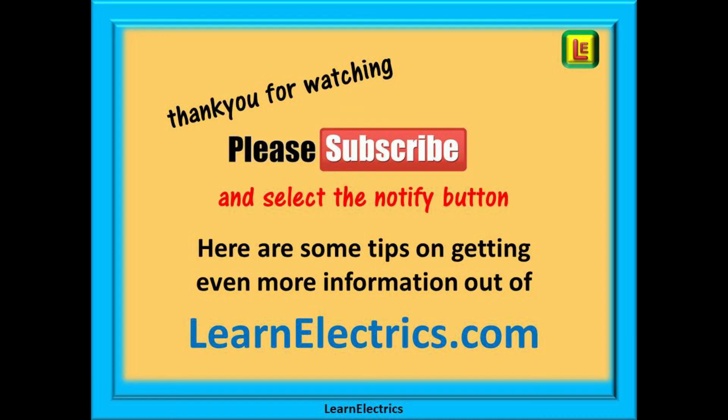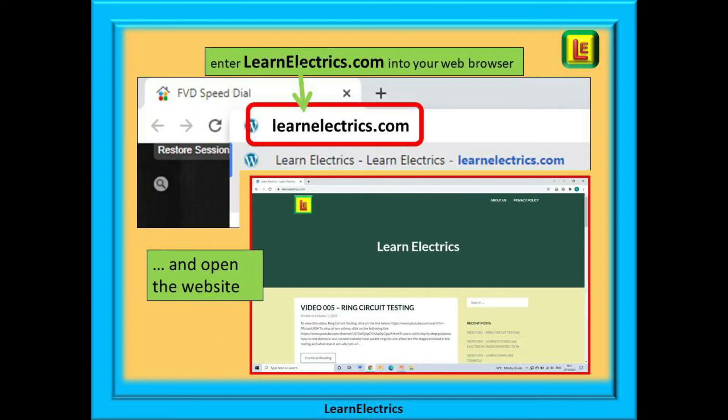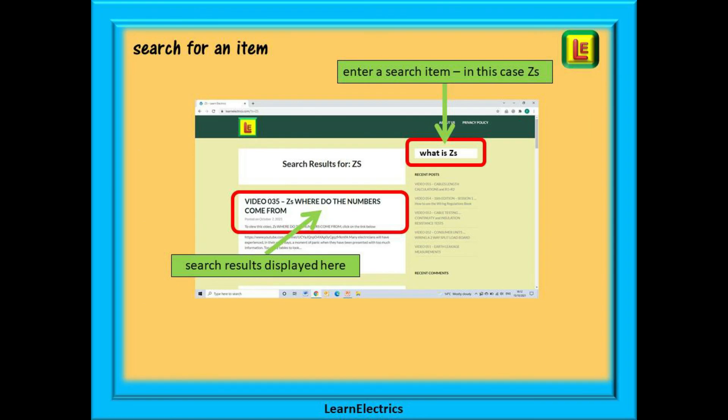Here are some tips on getting even more information and help out of learnelectrics.com. At your web browser enter learnelectrics.com into the search bar. Select learnelectrics.com from the choices offered and the website as shown will open up for you. You now have a couple of choices. You can search for a help item or any video by entering a keyword into the search bar on the right. Click on return and all the help files and videos with that word in the title will be listed for you. They will be shown with a short description. Click on continue reading for more information.